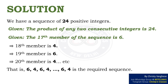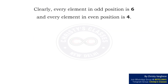That is, the pattern is 6, 4, 6, 4 and so on. Clearly, every element in an odd position is 6 and every element in an even position is 4.